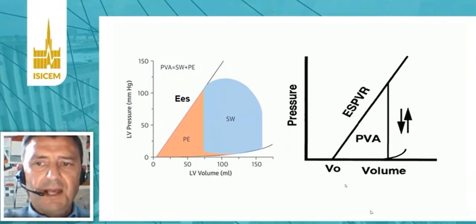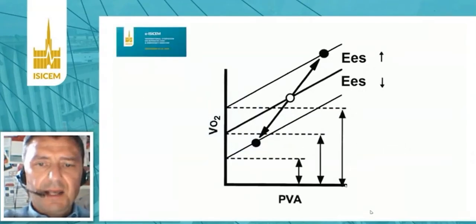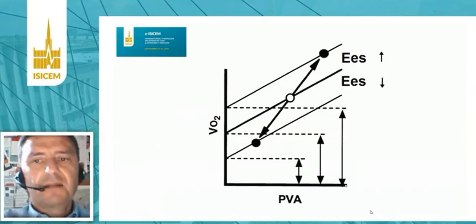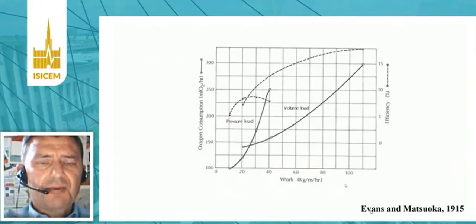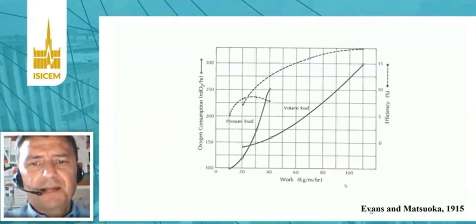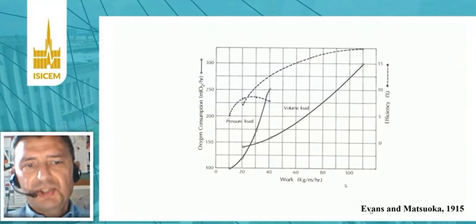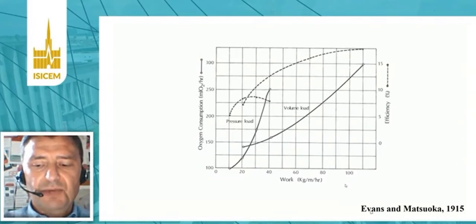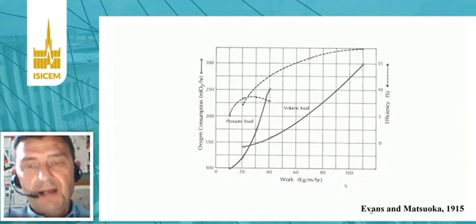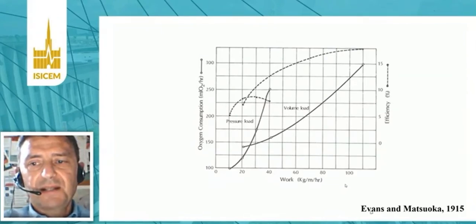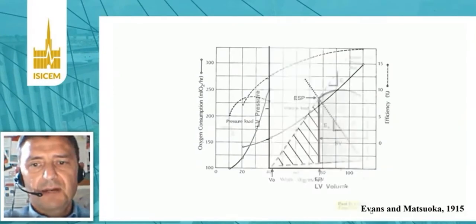For example, if we increase contractility, we will increase the P-V area and linearly increase myocardial oxygen consumption. This can also occur with different treatments. If we give a volume load to a shock patient, the volume load will immediately change oxygen consumption and affect the efficiency of the system. So not only drugs, but also the volume we administer to our patients may affect both efficiency and myocardial oxygen consumption.